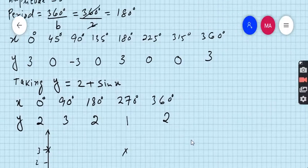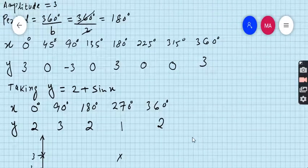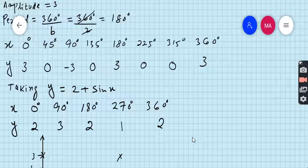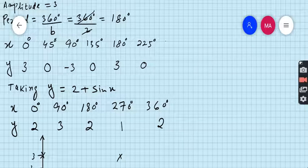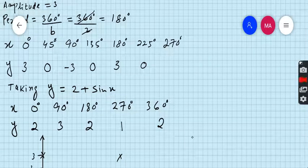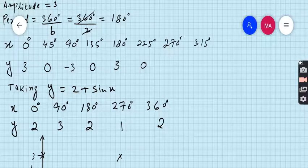Oh, sorry, one value is missing, that is, sorry for this, 270. 225 plus 45 is 270, then 315, then 360, do not worry.